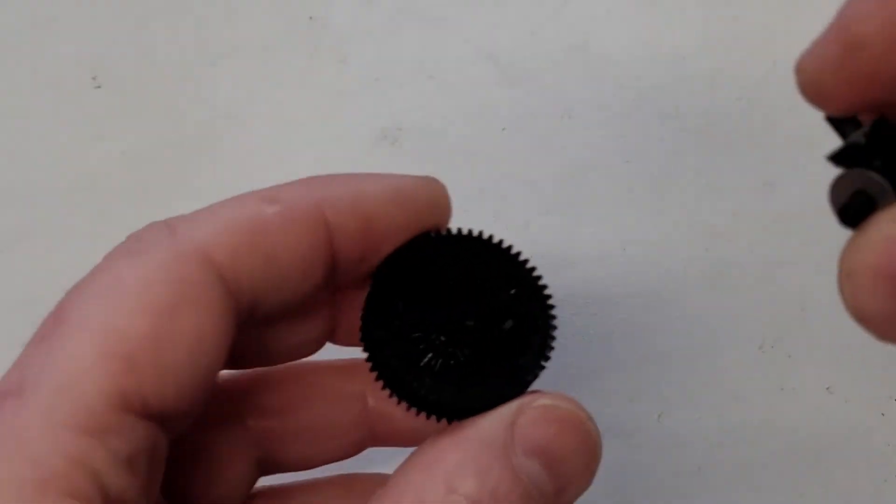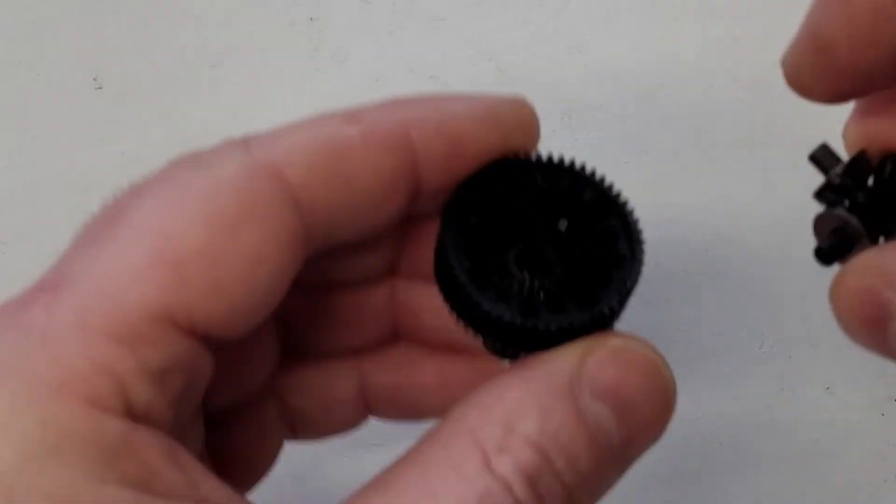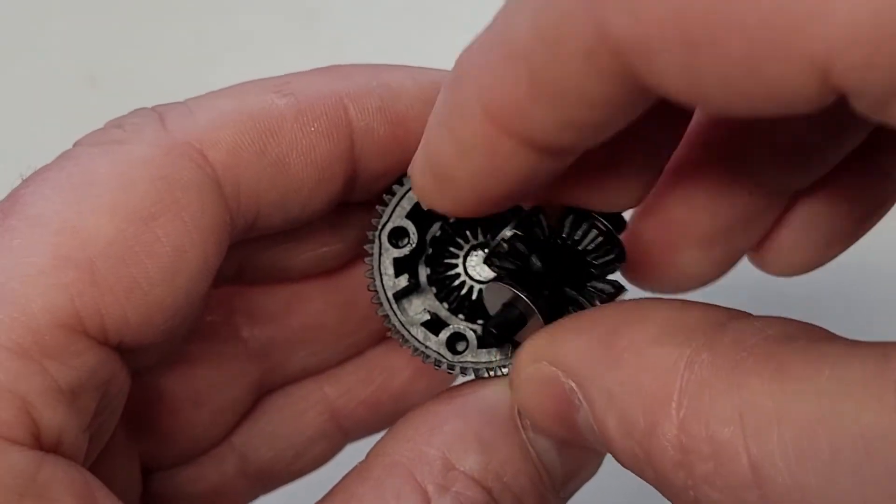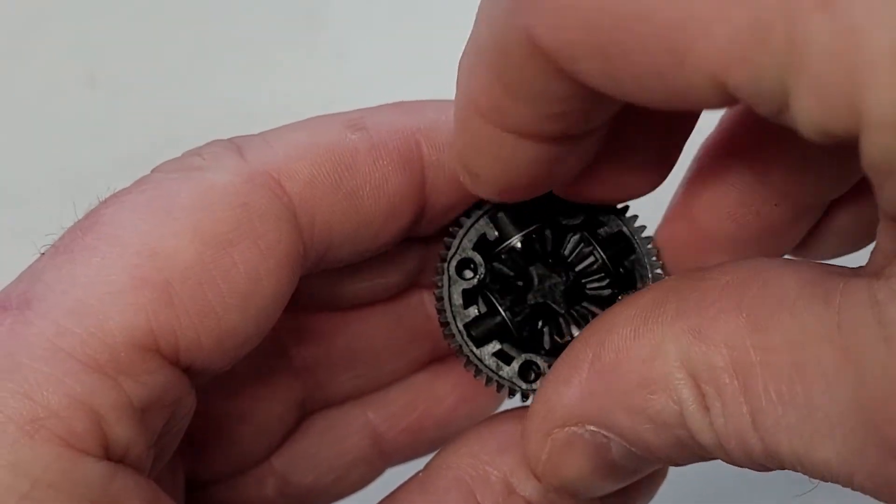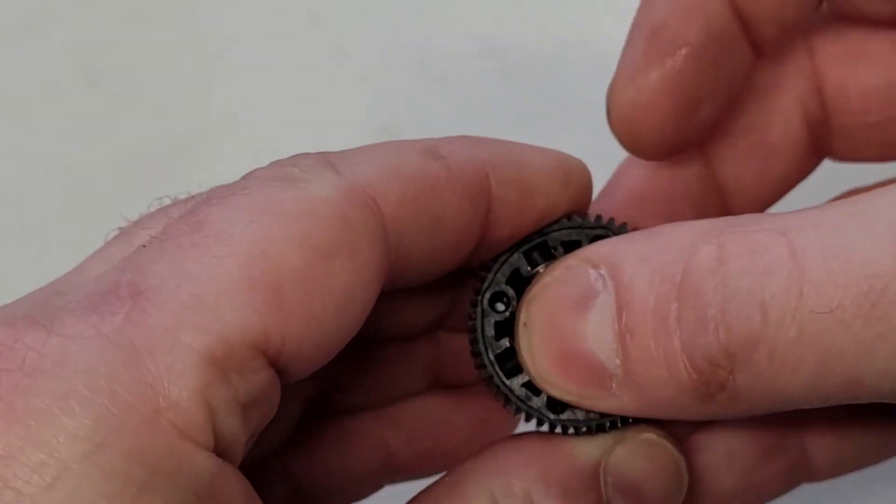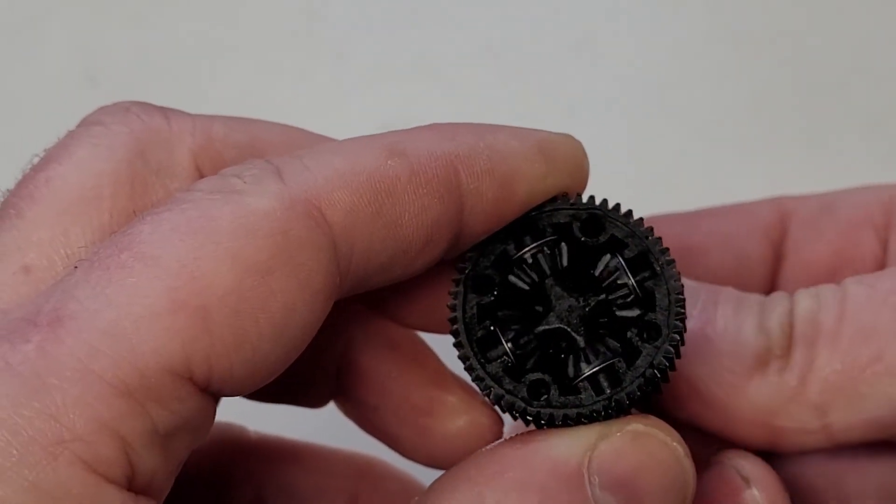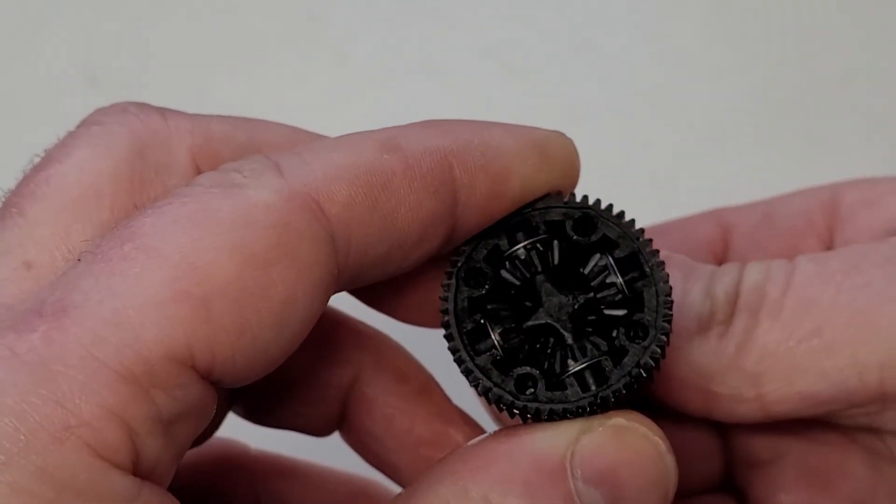So what we do now is we need to locate this set of gears into here. You see the cross pins locate into there like that, and that is pretty much the diff built up.